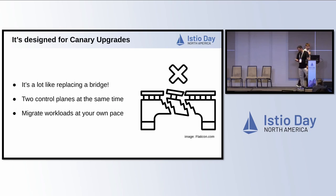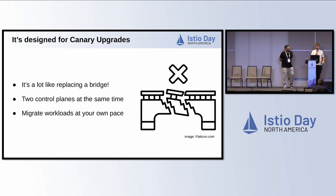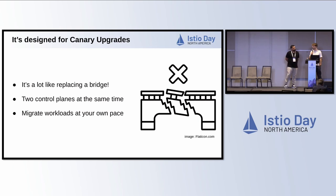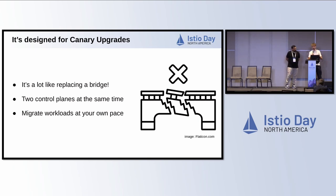I'll talk about what's different in the Sail Operator compared to the in-cluster operator we had before. One of the main things we designed the operator around is canary upgrades. If you haven't used canary upgrades in Istio yet, imagine it like having to replace a bridge while traffic is going over it — of course you could just shut it down, but usually you want to keep the traffic going.